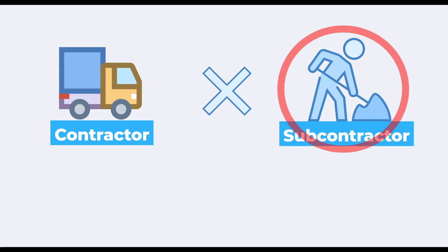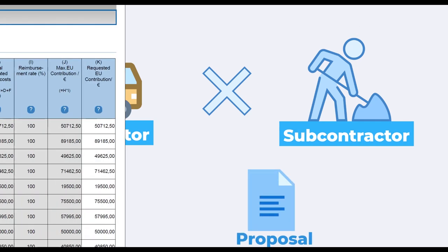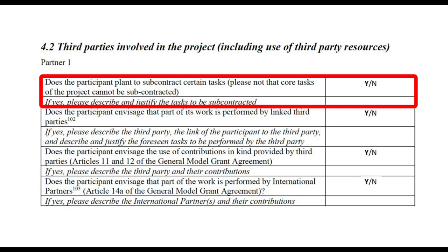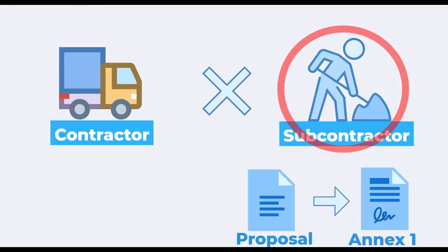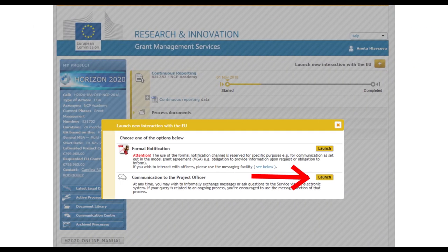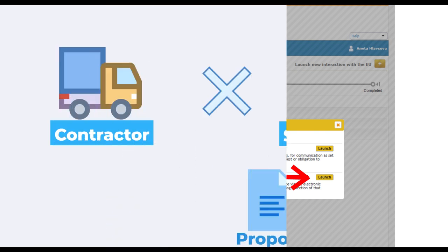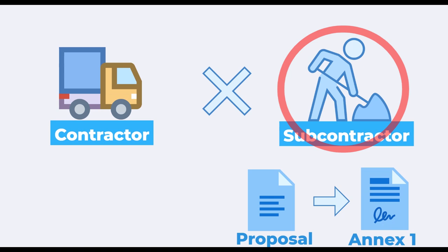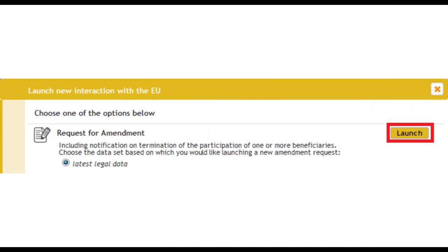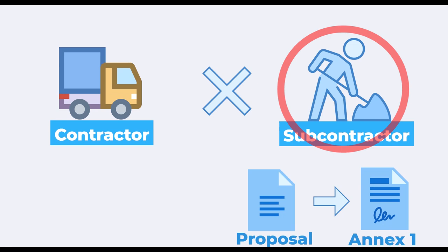The most important distinction is that subcontractors partake in working on project tasks. Therefore, the work to be implemented by subcontractors must be foreseen in project proposals. If the proposal is successful, the foreseen subcontract becomes part of Annex 1, the description of the action. In case a subcontract was not foreseen in the project proposal and yet is necessary for implementing the action, the beneficiary should contact their project officer. In exceptional cases, the project officer may apply the simplified approval procedure and decide that the use of the subcontractor is approved. In most cases, however, it will be necessary to amend the grant agreement and officially add the new subcontract to the project. Finally, the Commission does not allow subcontracting among the project partners.